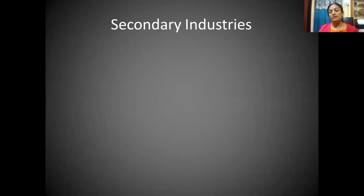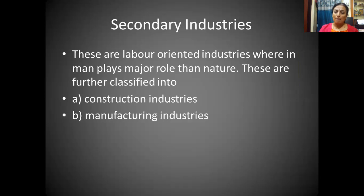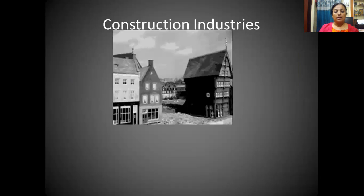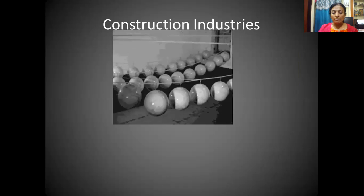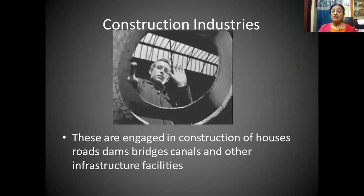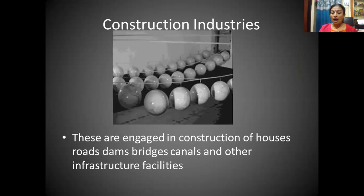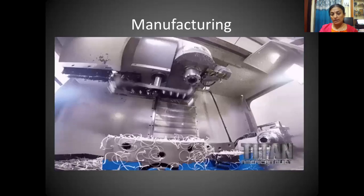Primary industries mainly depend on nature, and human efforts are comparatively lesser. Secondary industries, on the other hand, are labor-oriented — man plays a major role rather than nature. These are further classified into construction industries and manufacturing industries. Construction industries involve the construction of bridges, dams, houses, and buildings — they are engaged in building roads, canals, and other infrastructure facilities.